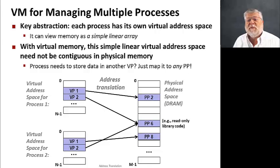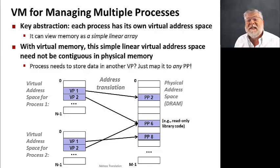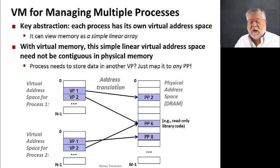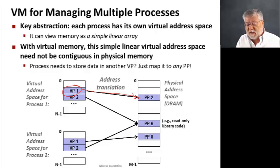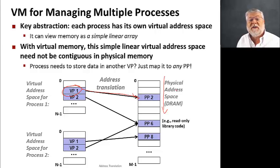How does virtual memory manage multiple processes? The key abstraction is that each process has its own virtual address space. The virtual address space is a simple linear array of one byte after the other. But this linear virtual address space does not need to be contiguous in physical memory. Because we're mapping things at the level of pages, we can put any virtual page at any location in physical memory. Virtual pages can be scattered throughout physical memory in any order, so we don't have to worry about moving things around to keep them in the exact same order.